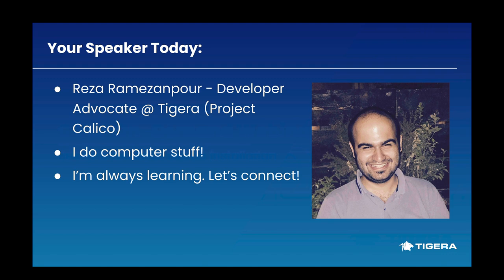But before we get started, let's get to know each other a little bit more. My name is Reza, and I'm a developer advocate at Tigera. Tigera is the company behind the open source project Calico, where we do all kinds of fun stuff to revolutionize Kubernetes networking and security. I used to be a security consultant, a system engineer, network administrator, and a full stack developer. Currently, I'm advocating for a community that I love. I'm always eager to learn new stuff and open to suggestions, so let's connect and exchange ideas.